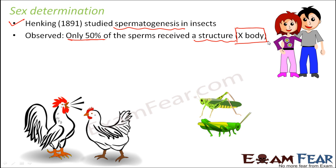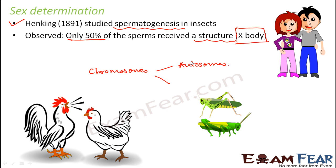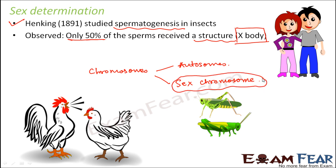Later, with more discoveries, it was found that the total number of chromosomes present in the cells of any living organism is always fixed. A good number of these chromosomes are autosomes — chromosomes that govern the somatic traits of the body. The last pair of chromosomes is the sex chromosome, and this sex chromosome actually decides the sex of that organism. The sex chromosomes are different in males and females.